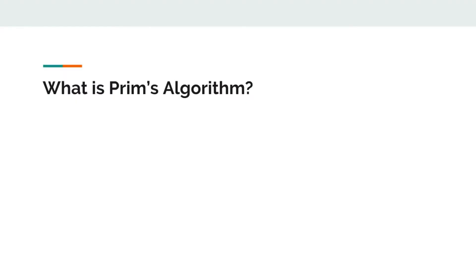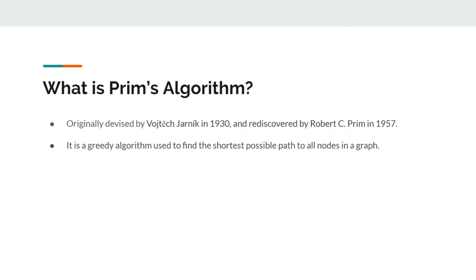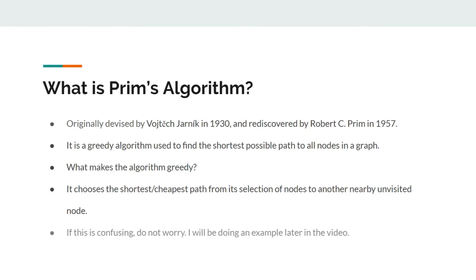So what is Prim's algorithm? It was originally devised in 1930 and rediscovered by Robert C. Prim in 1957. It is a greedy algorithm used to find the shortest possible path to all nodes in a graph. What makes the algorithm greedy is that it chooses the shortest or cheapest path from its selection of nodes to another nearby unvisited node. If this is confusing, don't worry — I'll be doing an example later in the video.